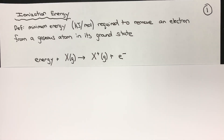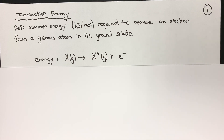Hey guys, today in class we took a look at the trends of atomic radius, ionic radius, and electronegativity. There are still two more trends that we need to attend to: ionization energy and electron affinity.